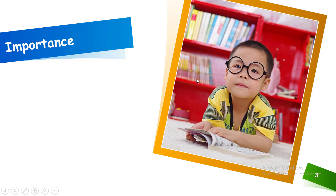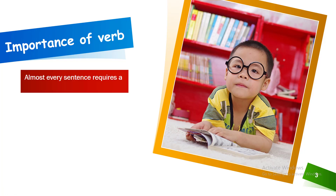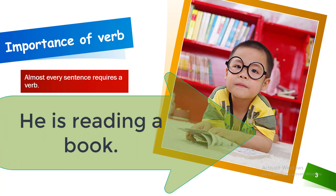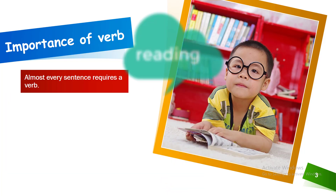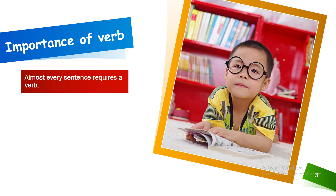Let's look at another slide: the importance of verb. Almost every sentence requires a verb — this is a very important part. Can you see a girl here? What is she doing? You can easily understand — she is reading a book. So what is the action? Reading is the action, and it is in the continuous form.